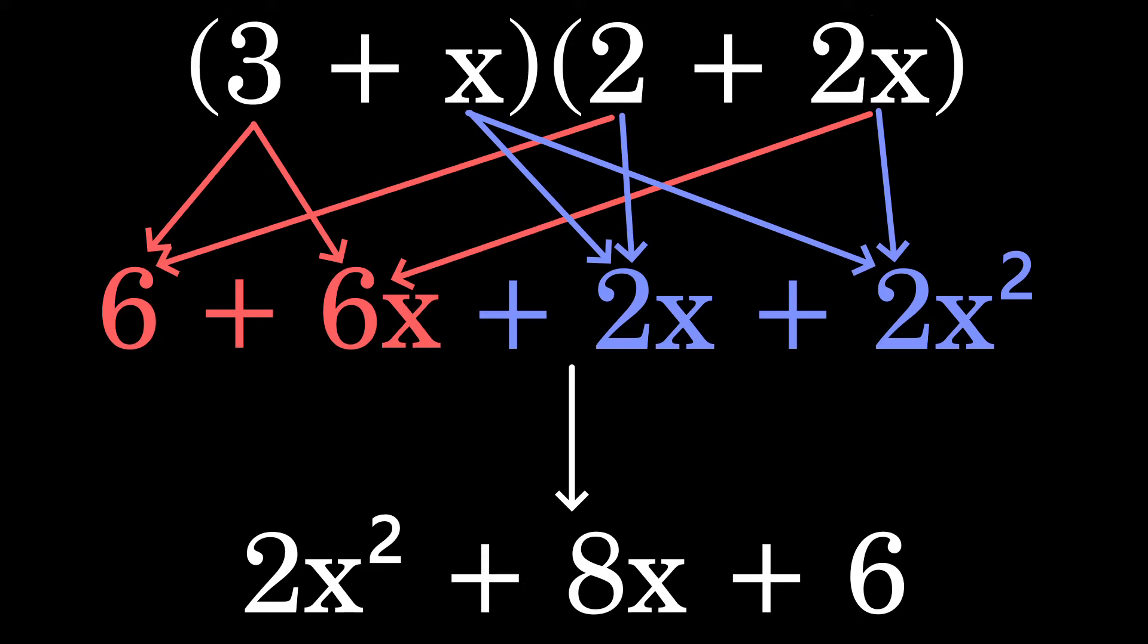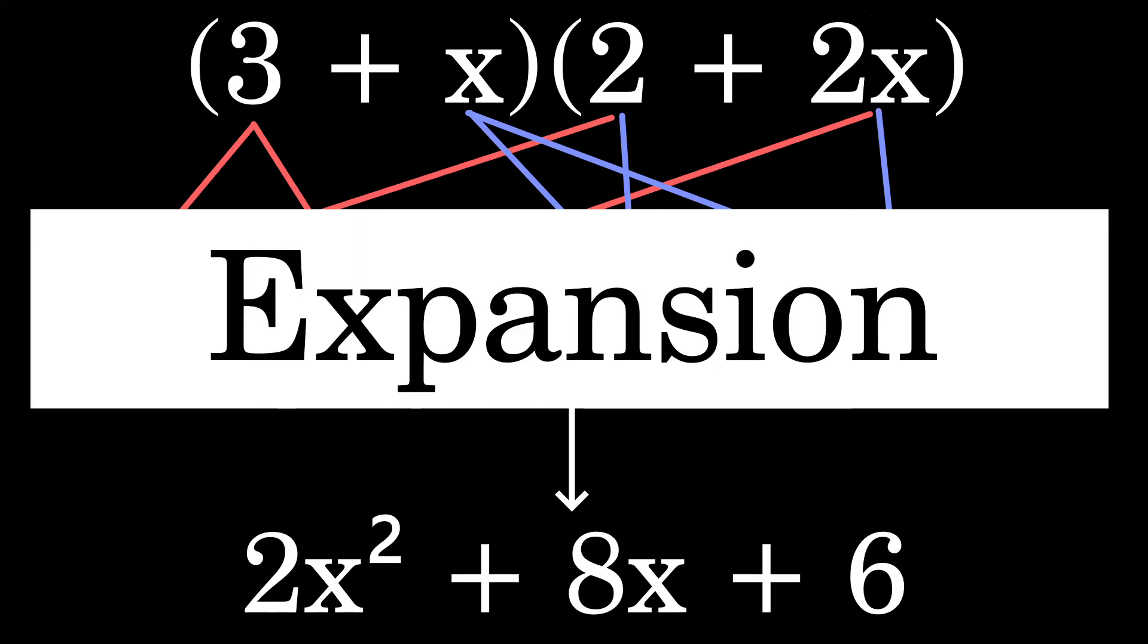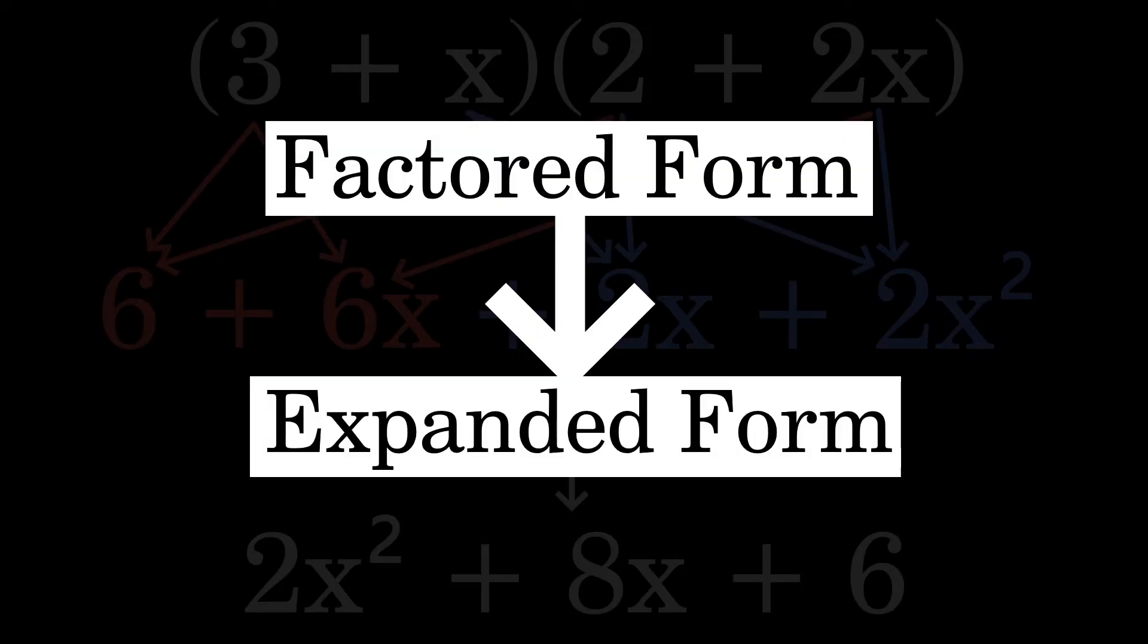Now combine like terms to get 2x squared plus 8x plus 6. We rearranged the 6 and the 2x squared because I like to have the powers in descending order. It doesn't matter, it's the same expression either way. This form of distributive property is also called expansion because we are taking the factored form of the function and turning it into the expanded form.